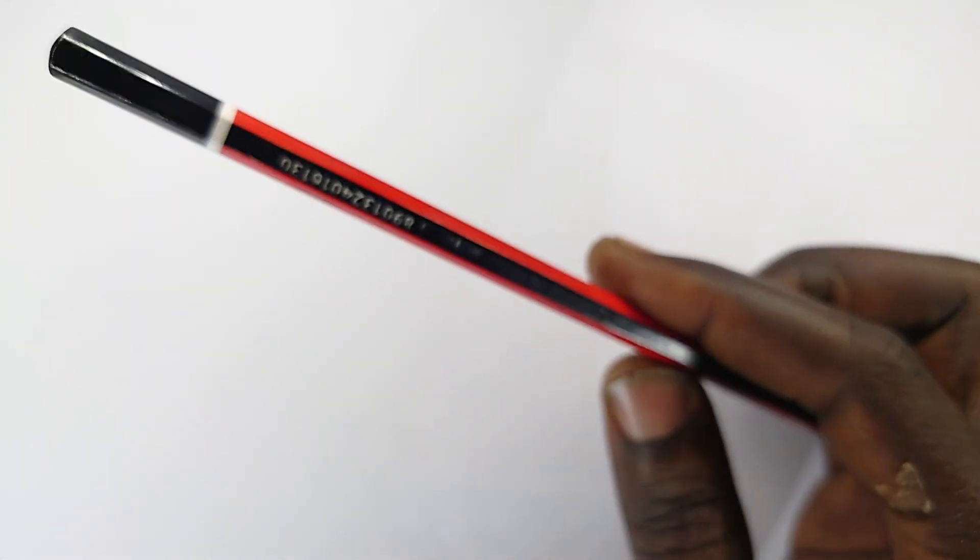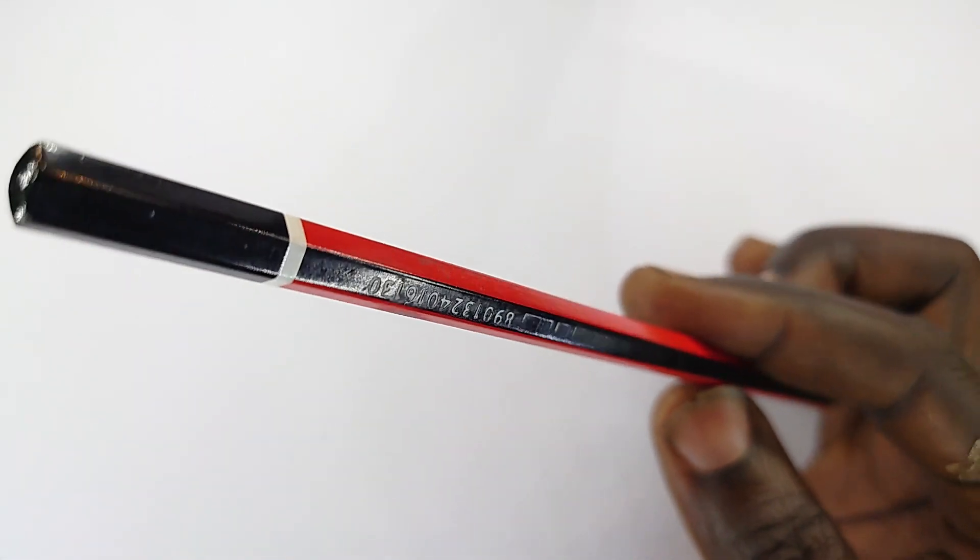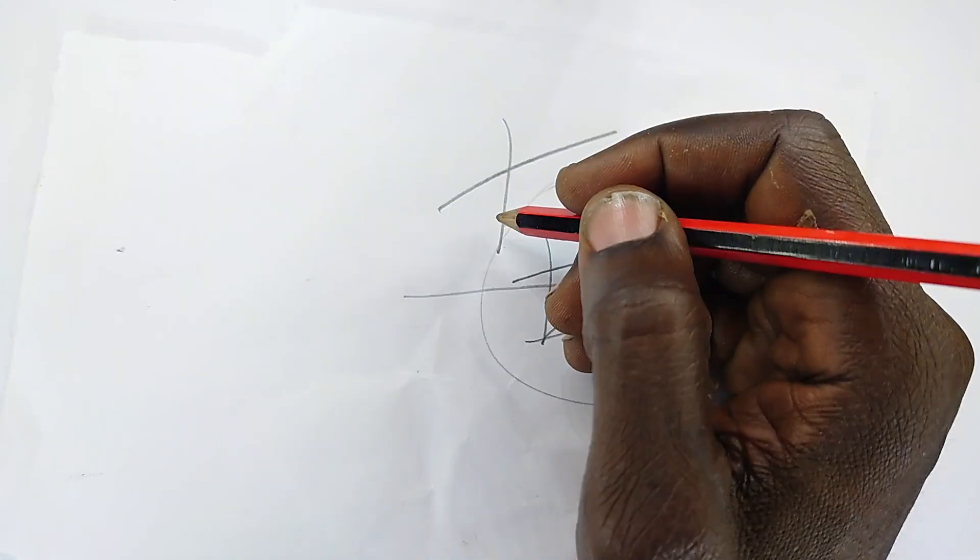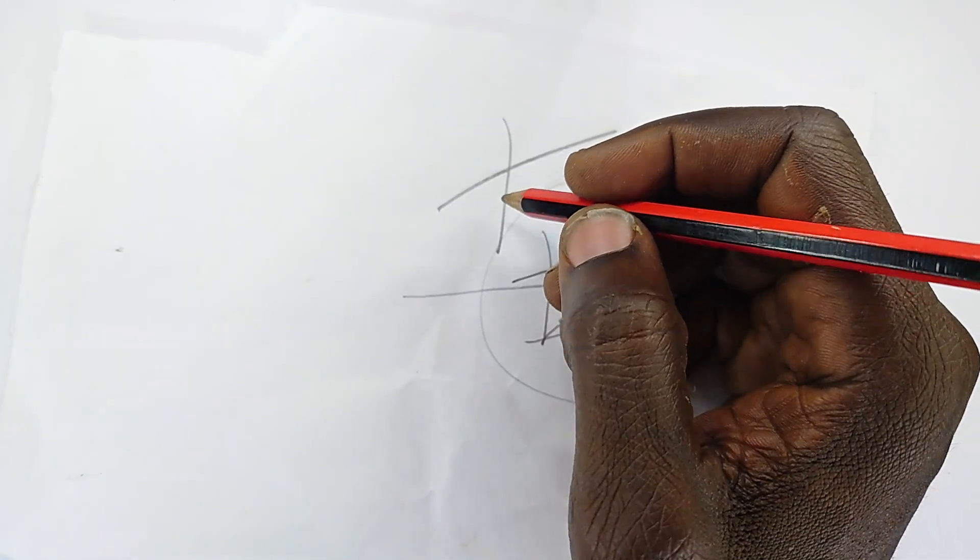This is a pencil, a drawing and writing device that allows you to write by means of abrasion just like that, unlike the ink which works by pouring ink onto the paper.